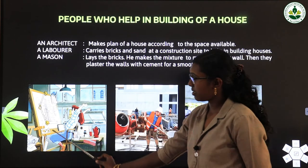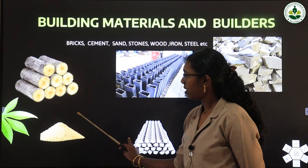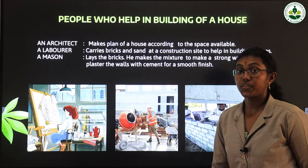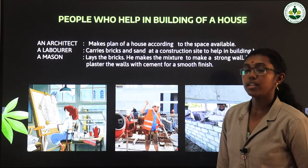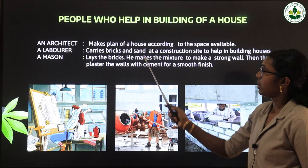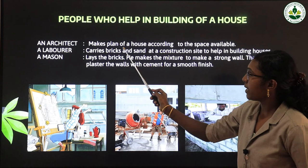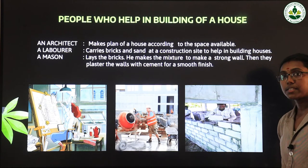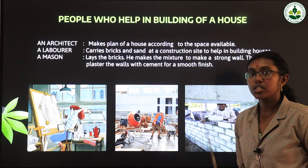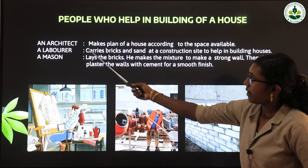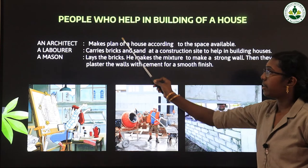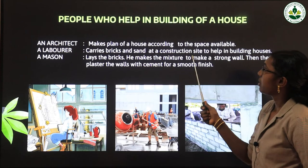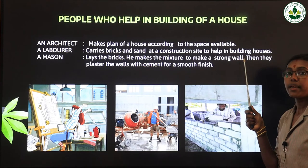See here — an architect is doing a drawing. According to the place, the climate, and the space available, they make a plan. An architect's main duty is to make a plan of a house according to the space available, the place, and the climate. Making the plan is the most important step.